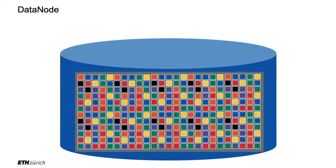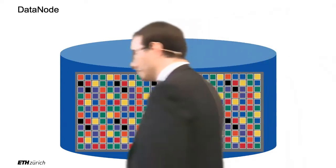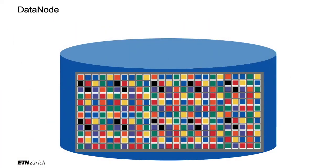On the data node, it's almost straightforward — it just stores plenty of blocks. These blocks are actually local files on every data node's local file system. The last block of a file may be less than 128 megabytes, and there is no waste of space — it will only take up the space it actually needs. If it's two megabytes, it's just a two-megabyte file on the local file system.